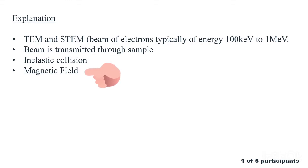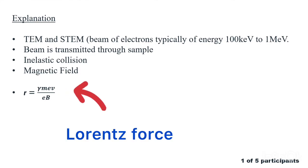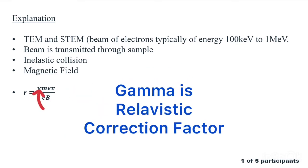When fast electrons travel through a region of homogeneous magnetic field which is perpendicular to the momentum, they are bent in a circular path with the radius r obtained by the Lorentz force. The formula is given where gamma is a relativistic correction factor.